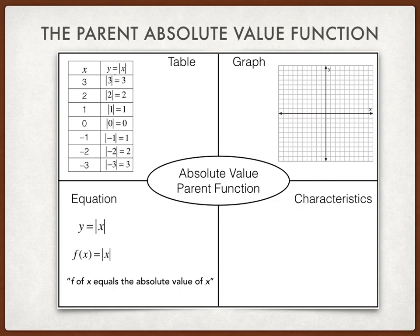What we can do next is plot these ordered pairs. We'll start with 3, 3. From our origin, we go 3 to the right and 3 up. Let's plot 2, 2, and then 1, 1.